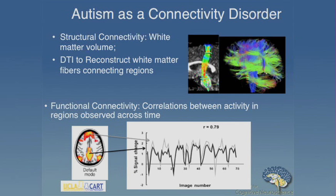This is an early study from Marcel Just's group at Carnegie Mellon, where we look at the pattern of activation during a task in two different regions and the extent to which activity in these regions co-vary. Areas of the brain that are highly connected to each other functionally will tend to go up and go down together. You can do this with activation fMRI and with resting state fMRI, and I'll be talking about both.